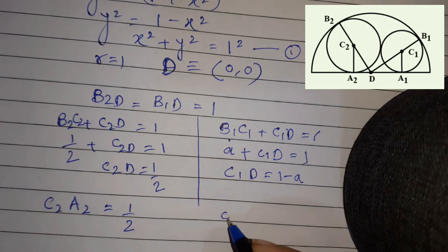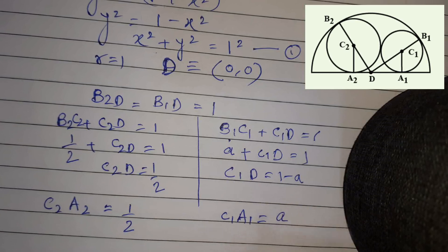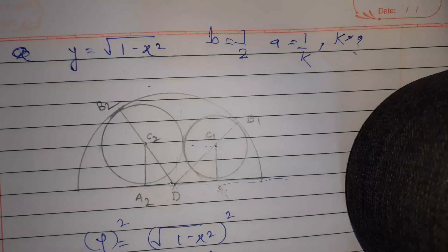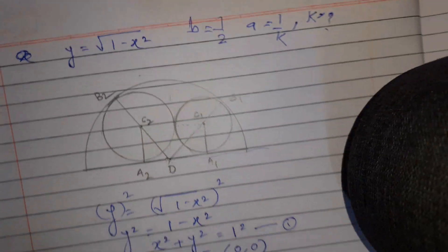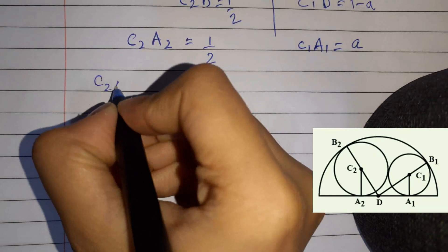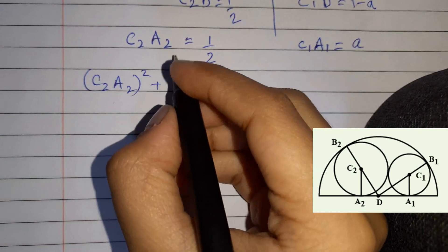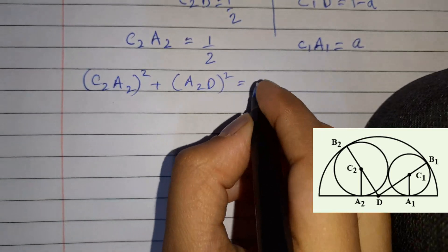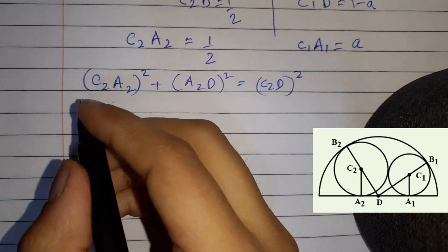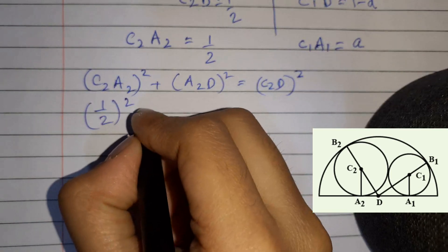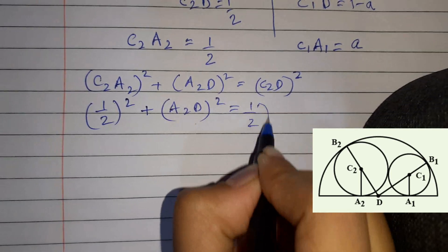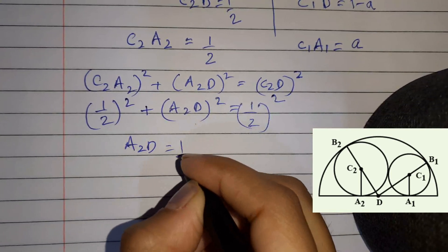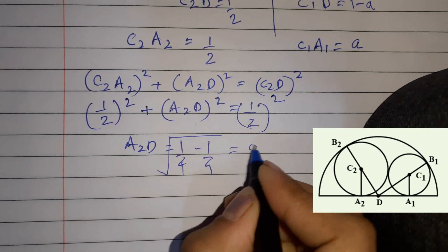Now, using the Pythagorean theorem on the right triangle formed by C2, A2, and D: C2A2² + A2D² = C2D². So (1/2)² + A2D² = (1/2)², which gives A2D² = 1/4 - 1/4 = 0, therefore A2D = 0.